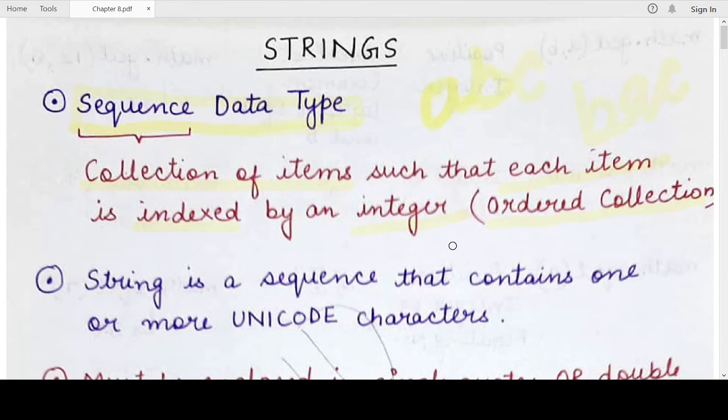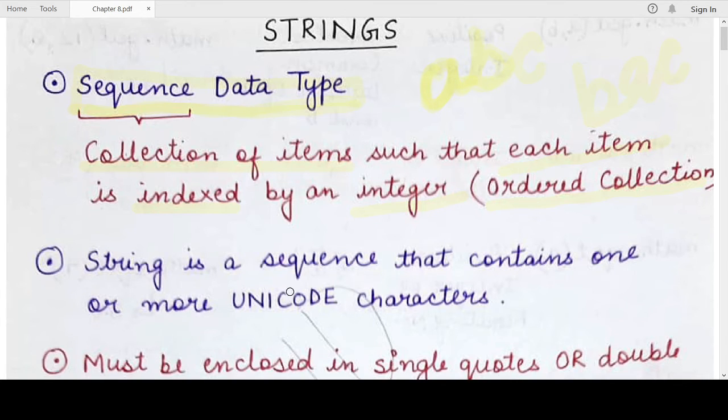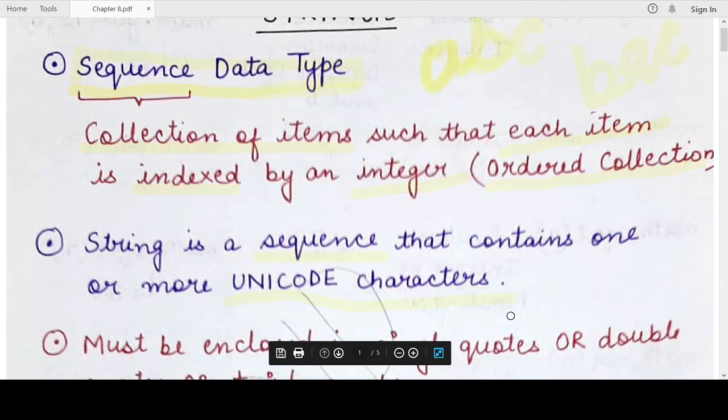What kind of values are present in this sequence data type? Only Unicode characters are allowed in the string data type. What consists of Unicode characters? I have created a separate video on ASCII and Unicode characters.